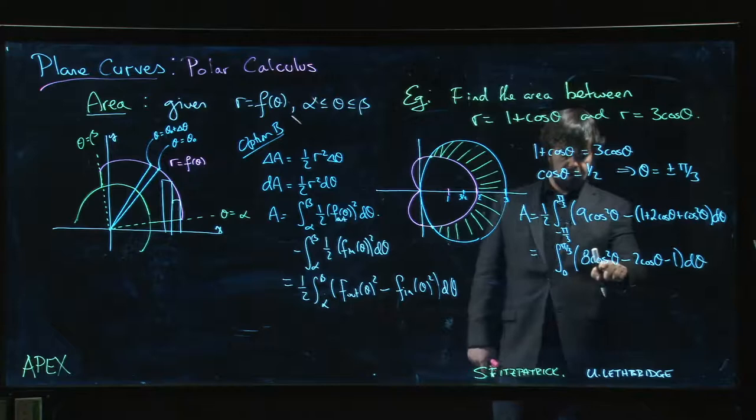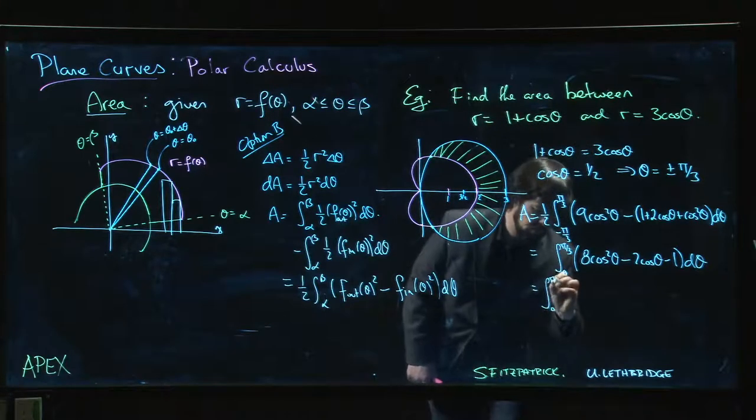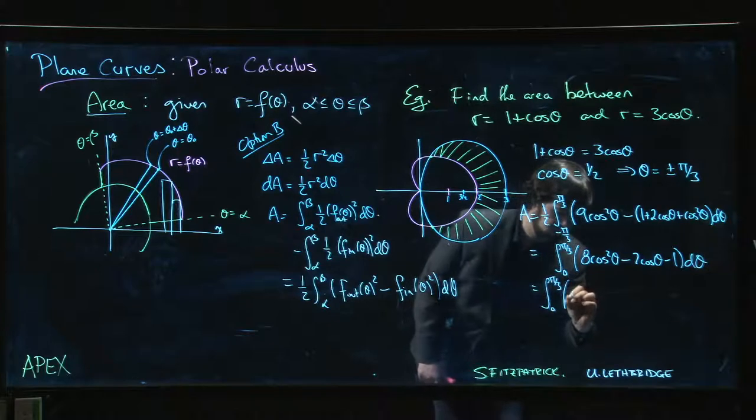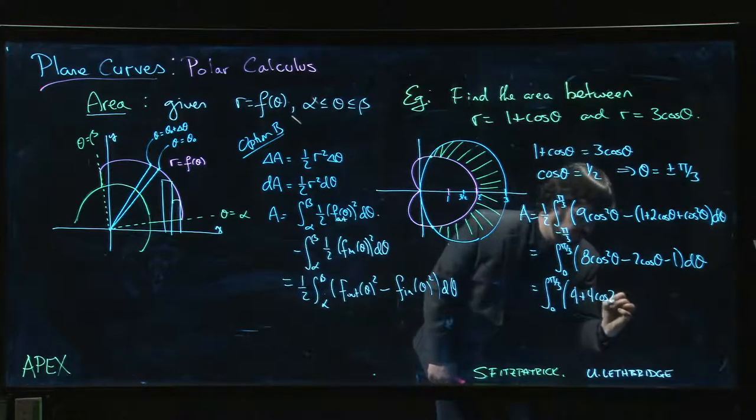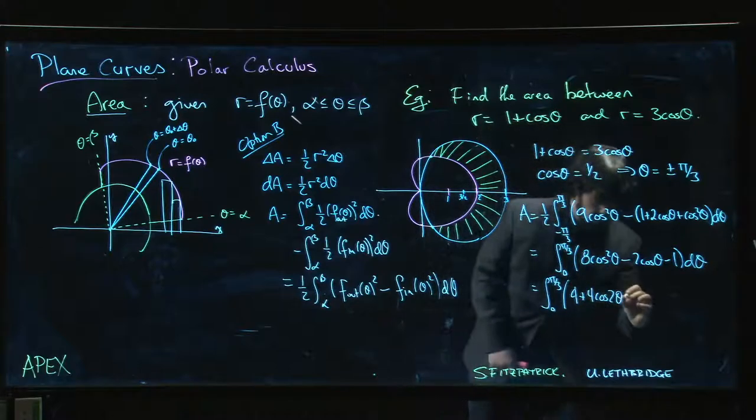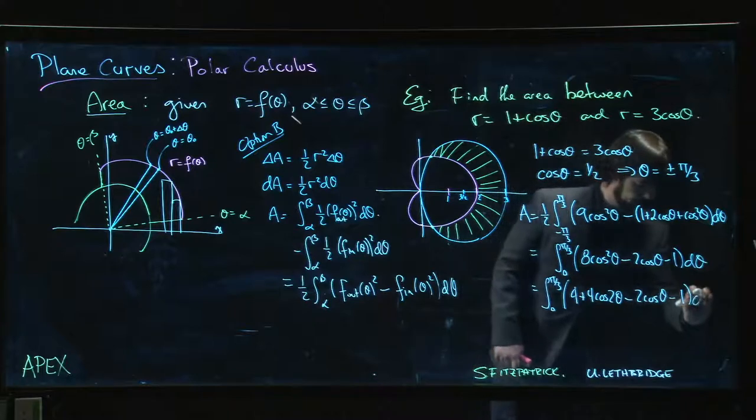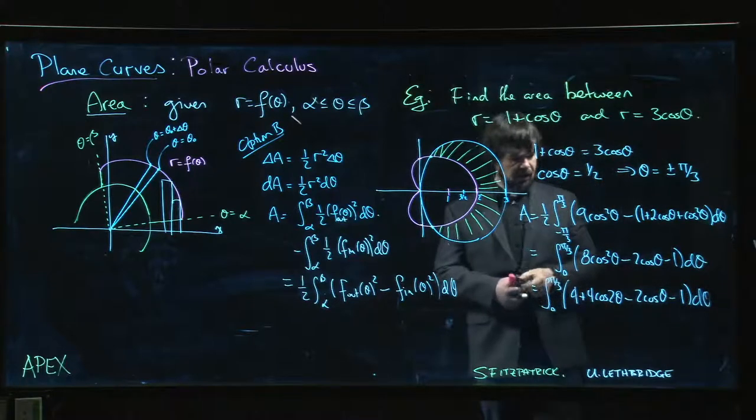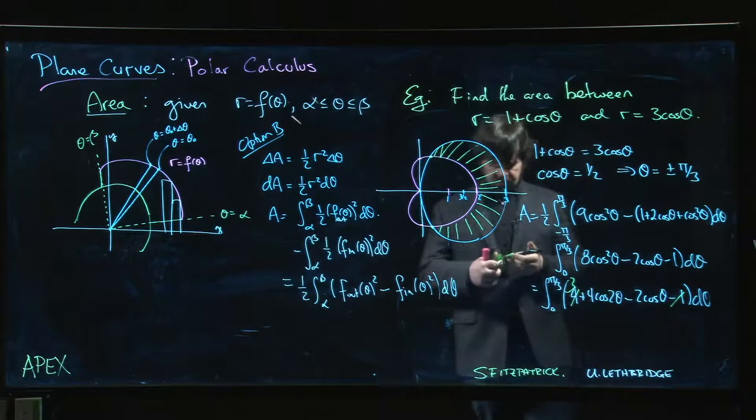Use the power reduction formula here. Integral from zero to pi over three, we have four plus four cos two theta minus two cos theta minus one.